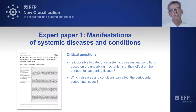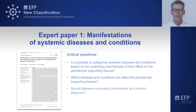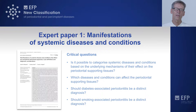Number two: which diseases and conditions can affect the periodontal supporting tissues? And number three: should diabetes-associated periodontitis be a distinct clinical diagnosis? And finally, another important one: should nicotine or smoking-associated periodontitis be recognized as a distinct diagnosis?